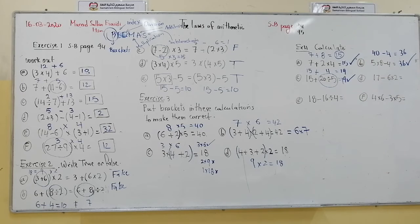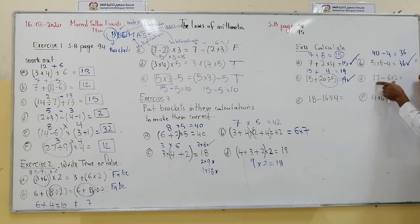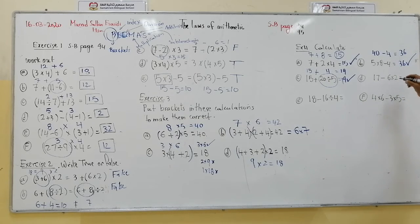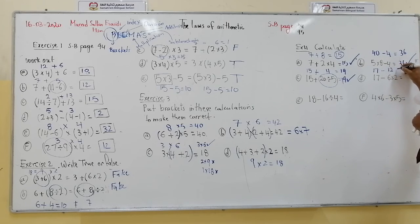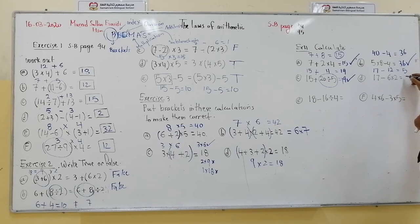Next: 17 minus 6 multiplied by 2. We cannot do 17 minus 6 first — we must do multiplication first. 6 by 2 is 12. Then 17 minus 12 is 5. The answer is 5.